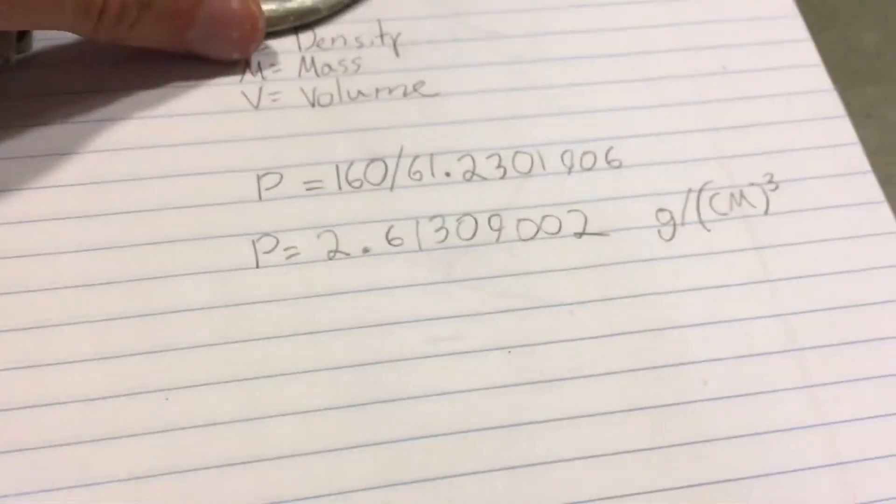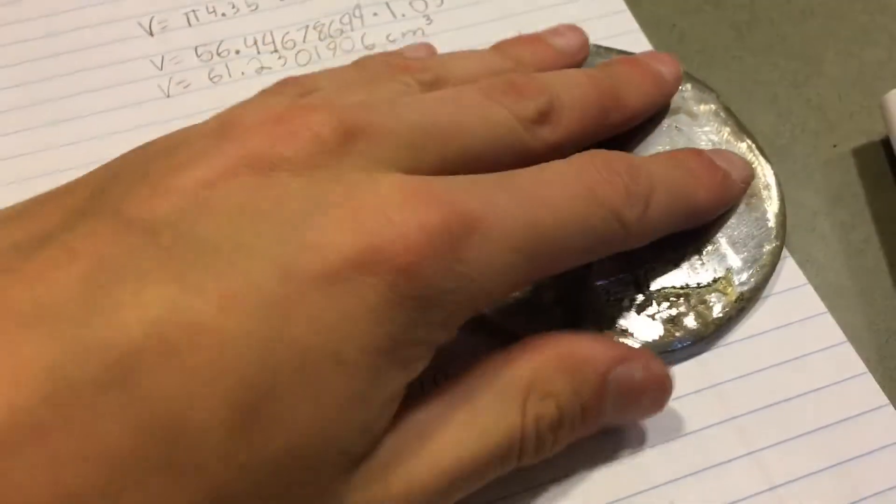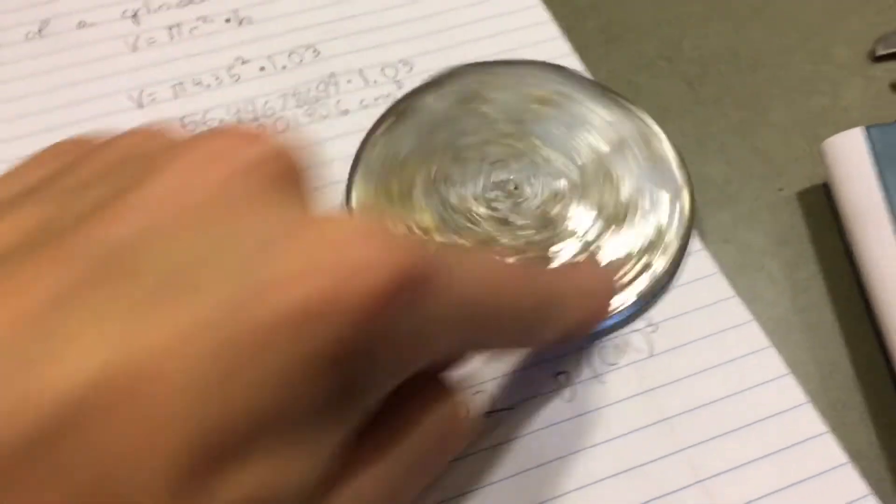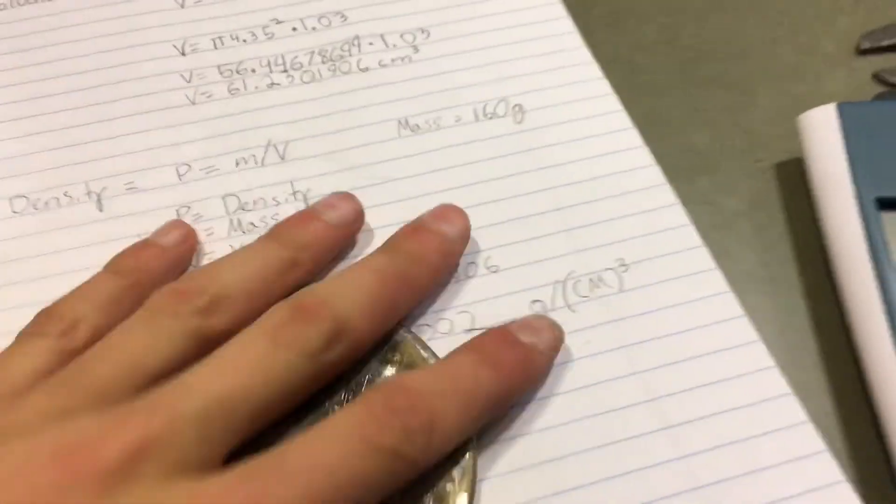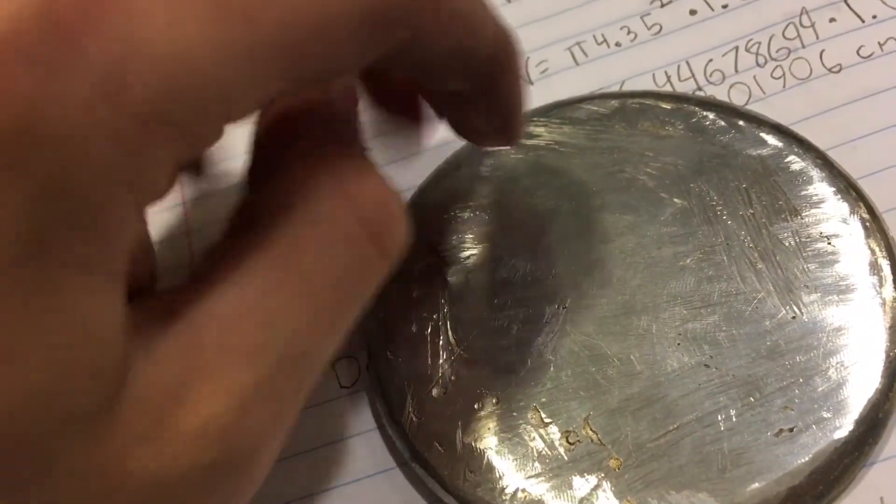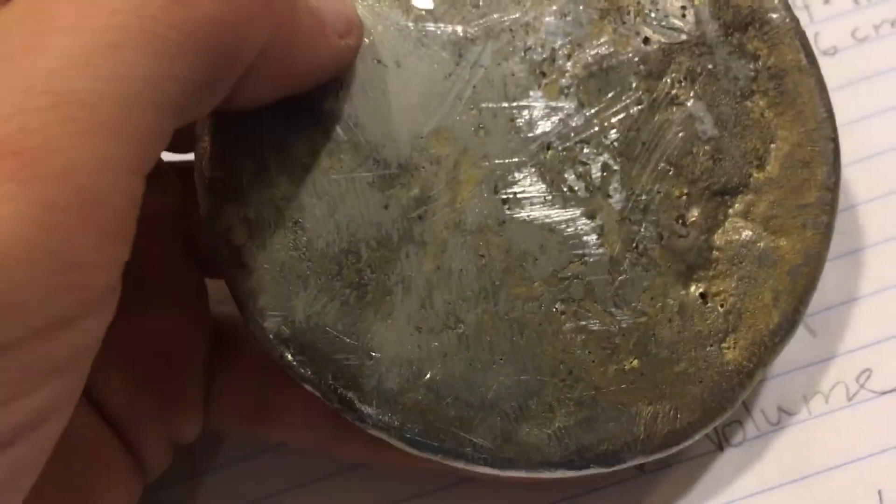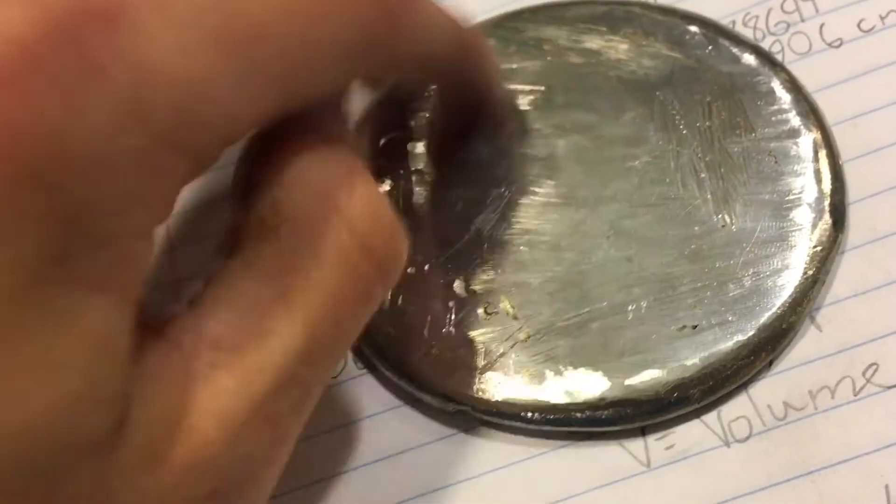Of this guy. Now that would be the average density, so not everything, but you know, if you like cut out a little bit of it, it might have a different density, but it's still close enough because it's an average.